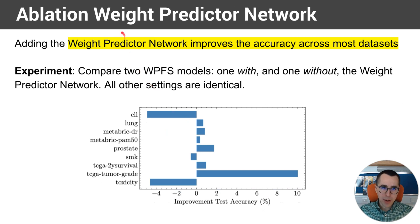We did a same ablation with the weight predictor network, and we find that across most datasets, the weight predictor network improves performance. In some tasks, such as this TCGA task, it adds 10% test accuracy, which is quite significant. While on other tasks, it reduces the performance.